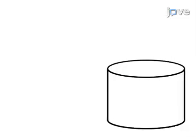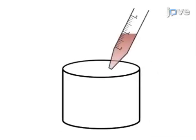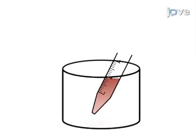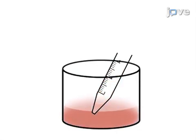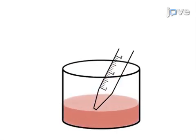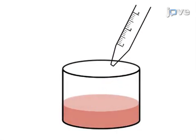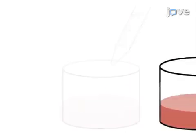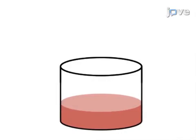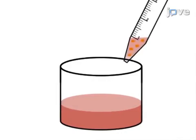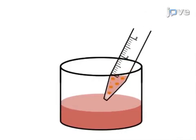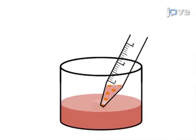The semi-solid agarose gel is constructed by first making a 0.6% agarose bottom layer. Next, a cell-containing 0.3% agarose gel layer is added above the bottom layer.